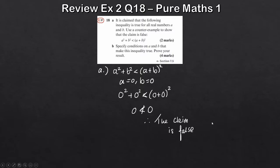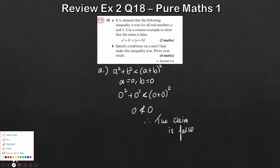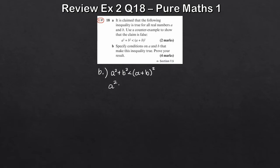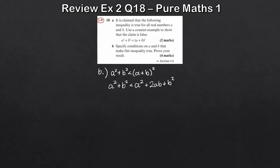For part B, we have to specify conditions on A and B that make the inequality true. The trickiest part — what I try to do is think about the actual inequality. We've got A squared plus B squared less than A plus B, all squared. The only thing we can do is expand the right hand side, giving A squared plus 2AB plus B squared. So the only difference between the left and right side is this 2AB term — that's the defining element.